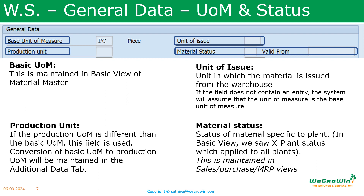There is another field called unit of issue. Unit of issue is the unit in which material is issued from the warehouse. For example, there may be coils or wires which may be bought in bundles, but when they are issued to production they will be issued in feet or meters. So the unit of issue is different from the unit in which we buy. If we don't maintain the unit of issue or production unit, the system will assume the basic unit of measure as the basis for all these details.